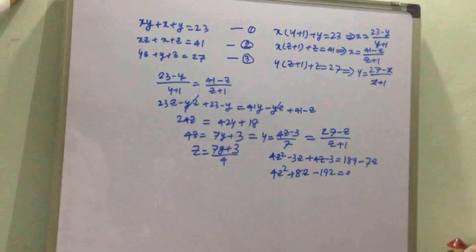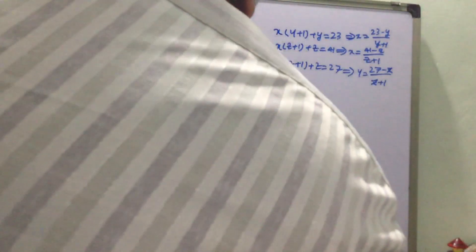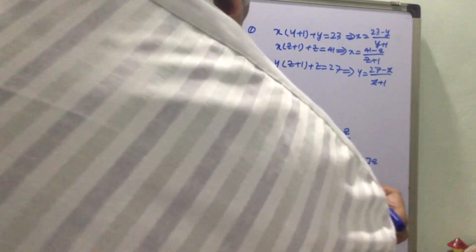We divide through by 4, so the equation becomes z² + 2z - 48 = 0.